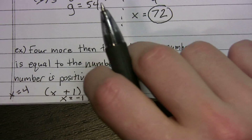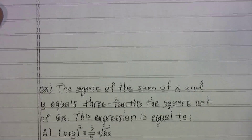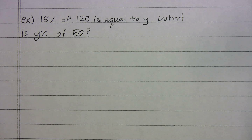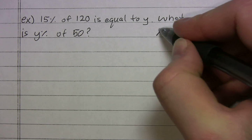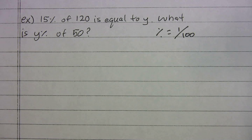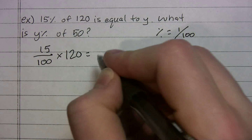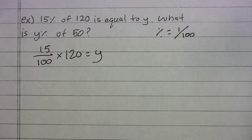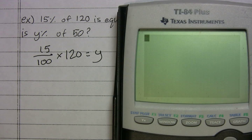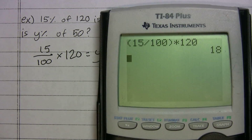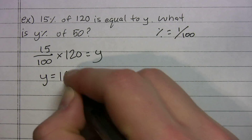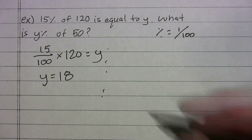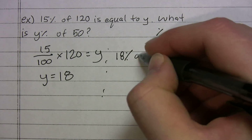The next problem says: '15 percent of 120 is equal to y. What is y percent of 50?' For the first part, percent means 1 over 100, so we write (15/100) × 120 = y. Using the calculator: 15 ÷ 100 × 120 = 18. So y = 18.